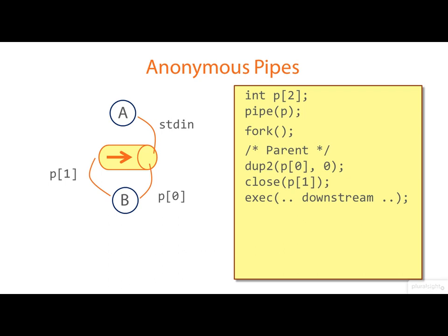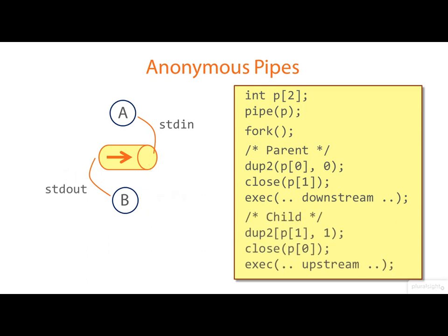Now you can do this either way round, but in this case I've got the parent is destined to become the downstream process. So it duplicates the downstream end of the pipe p[0] onto its standard input and it closes its handle on the upstream end. It will then probably go away and exec whatever it wants the downstream program to be.